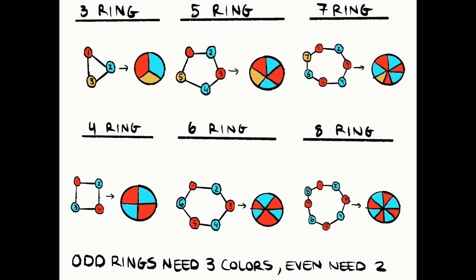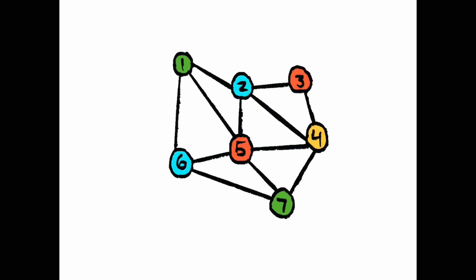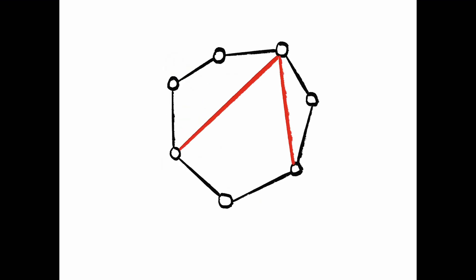Now we can go back to the network we made from our map and look at it in terms of interconnected loops. At this point, you may be wondering, what happens if I draw more links connecting vertices in a ring?